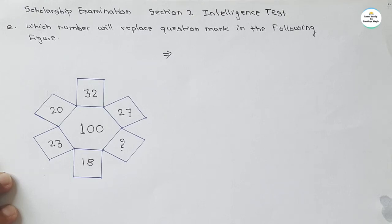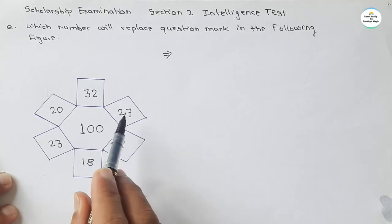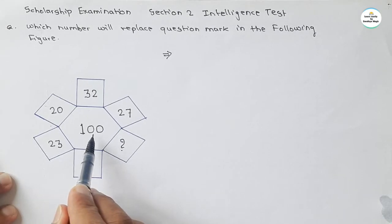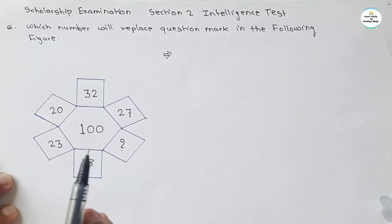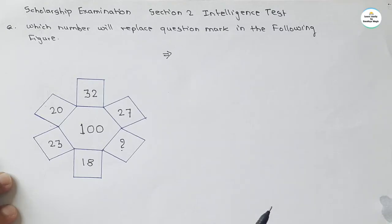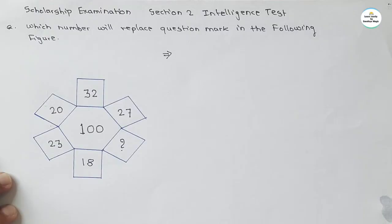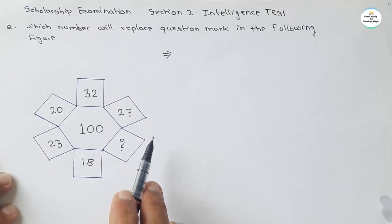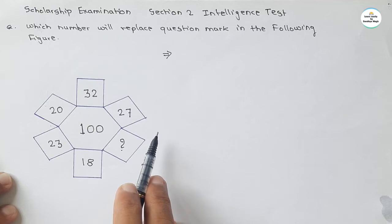We have to find the relation between opposite numbers with respect to the central number. Once we find that relation, it will be applicable to replace the question mark. But before giving the solution to today's question, let's first see the solution to the practice question from the last video.